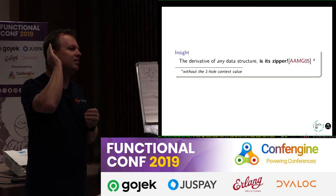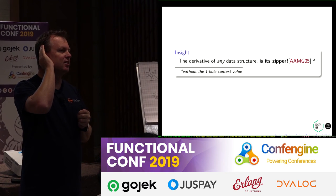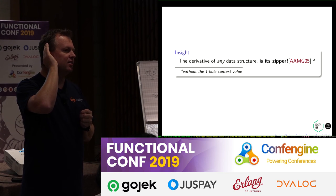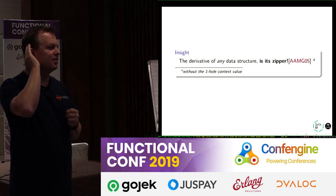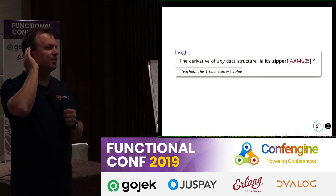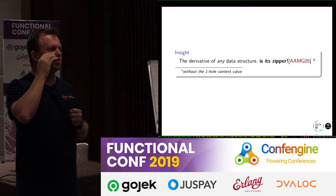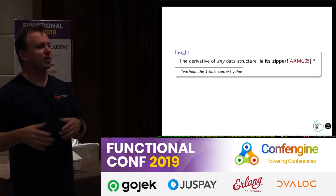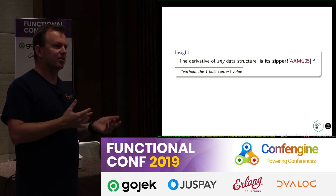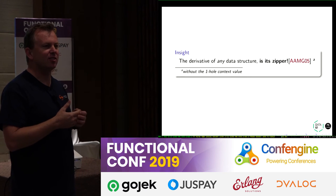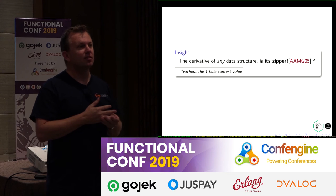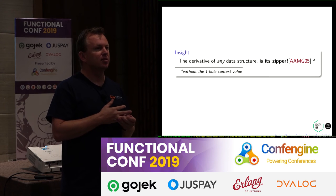Q&A: Everyone speaks about sum types and product types, but never about subtraction or division types — quotient types. Are there type systems that use them? Yes, there do exist other type systems where they have quotient types and things like that. I tend not to use them, but that's just my bias because I use Haskell a lot. But they do exist.